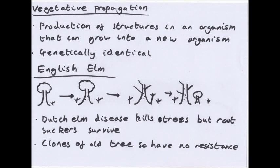Now, plants. Vegetative propagation refers to the production of structures in an organism that can grow into new individual organisms. These offspring contain the same genetic information as the parent and so are clones of the parent. This is natural cloning — essentially a form of asexual reproduction. Different plants propagate differently.